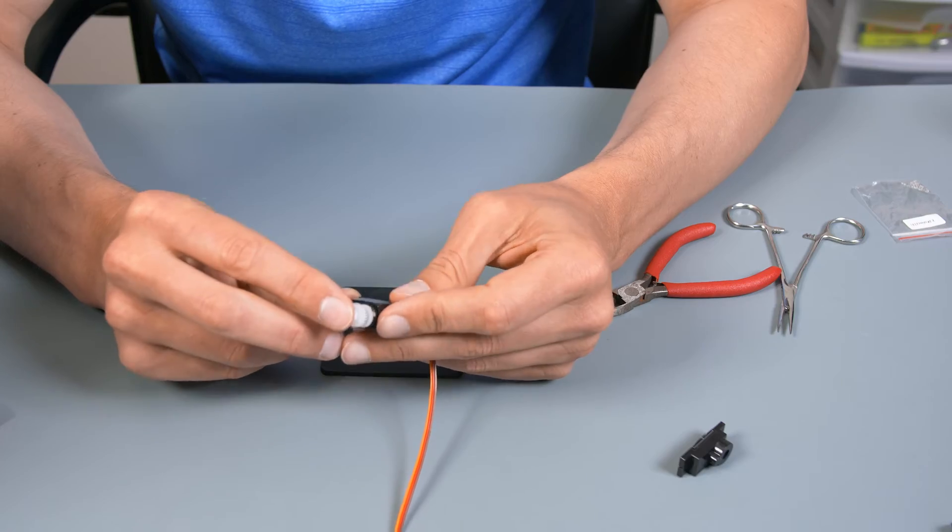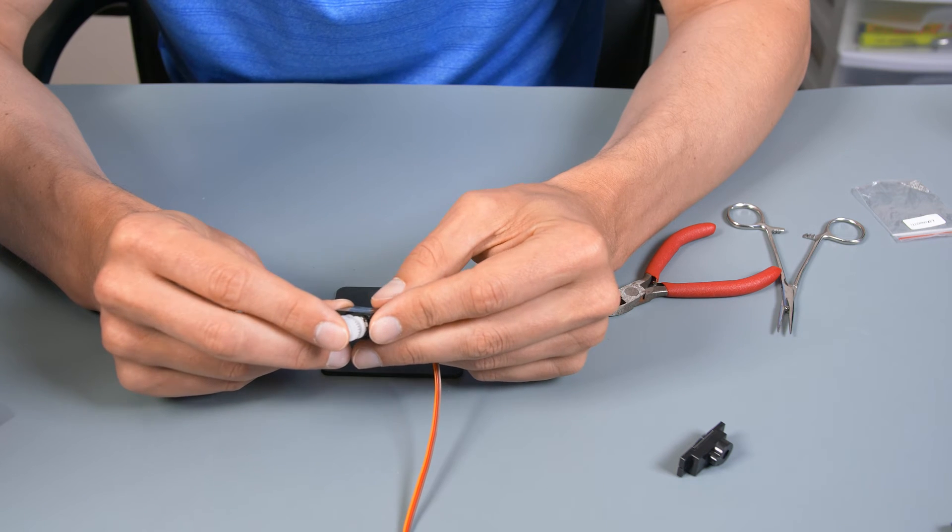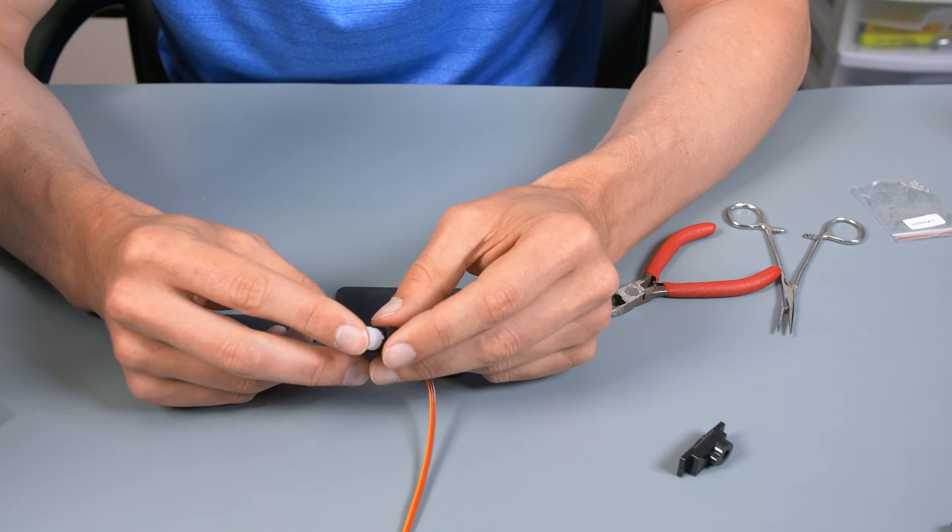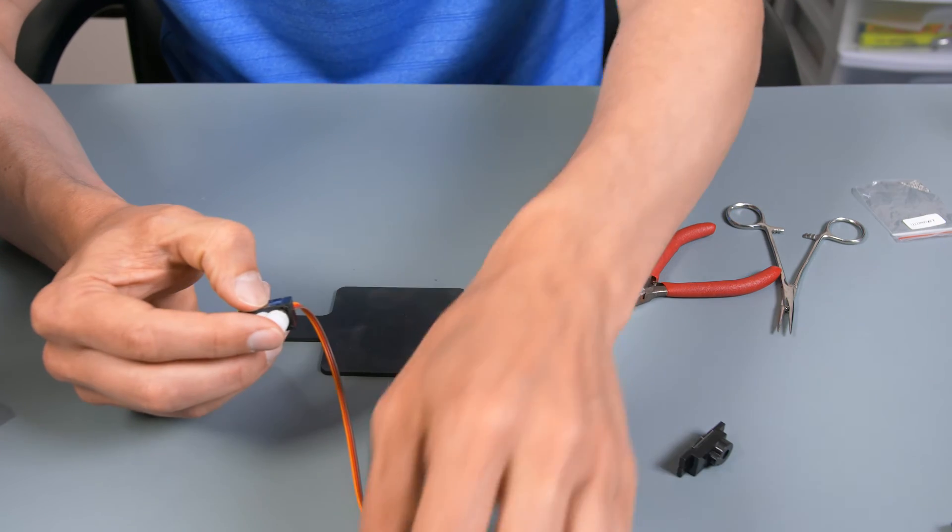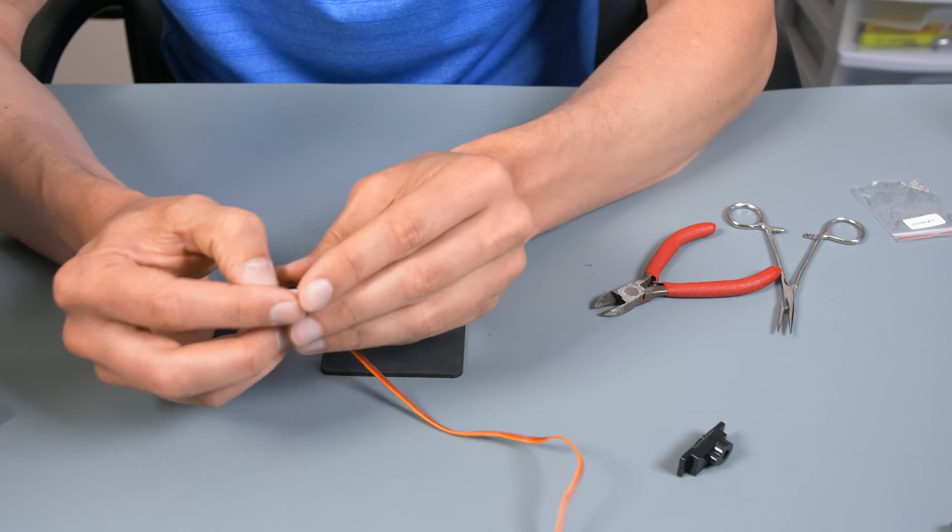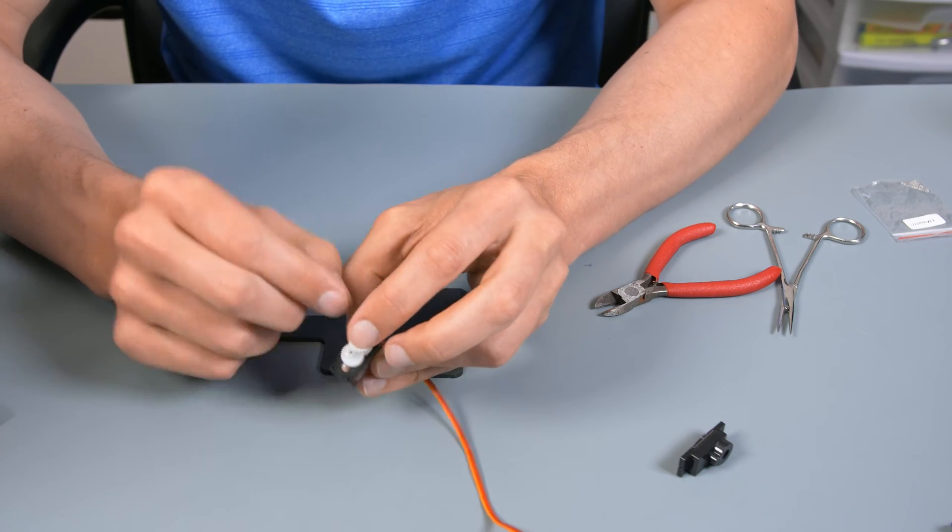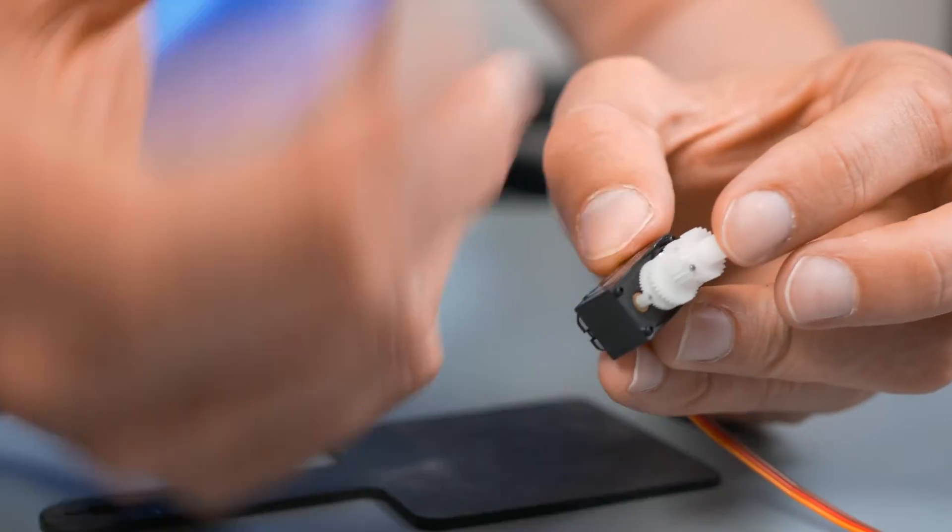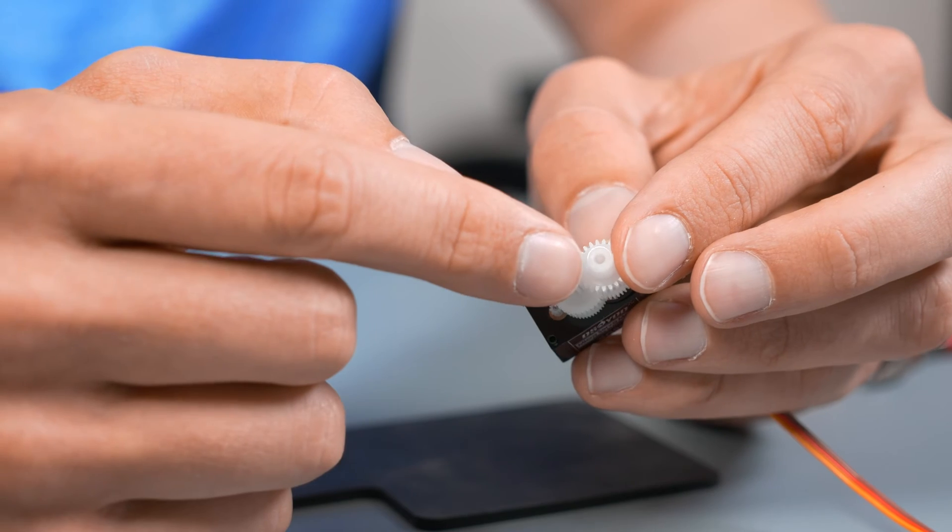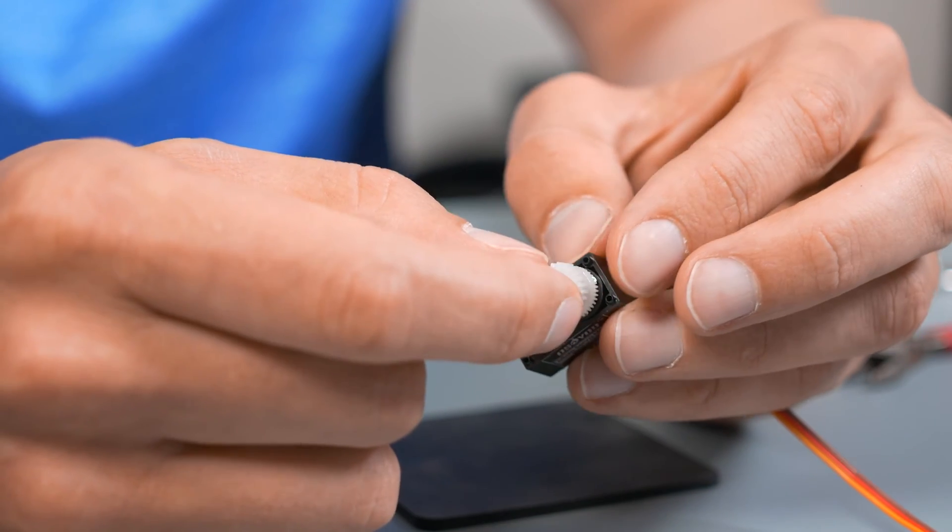So the way we are going to be faking out the potentiometer is we're going to just be bypassing it completely. But other people, other methods out there are to basically use a special device, which we don't have, which is why we're not doing it, that hooks up to your servo and centers it and then they will literally glue the servo in place at that point so that the servo can't twist. But even if you do that, you still need to do this top portion because this top portion needs to be able to spin freely.